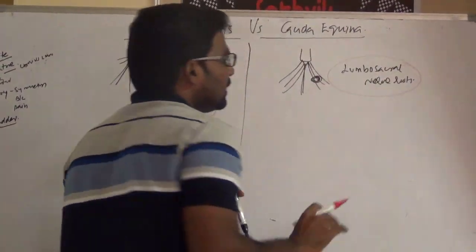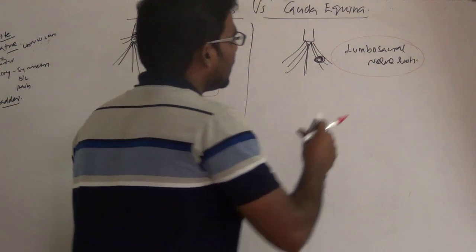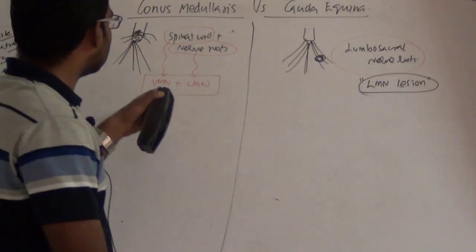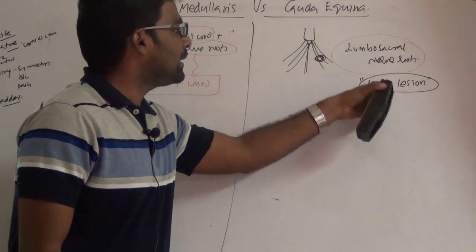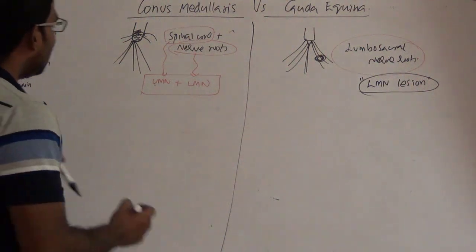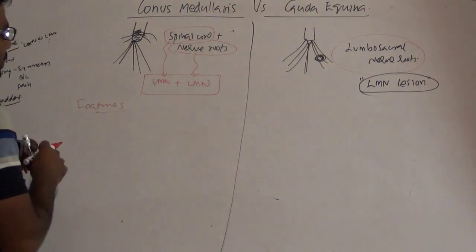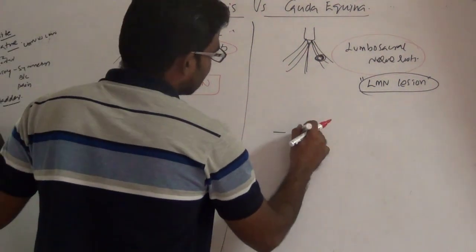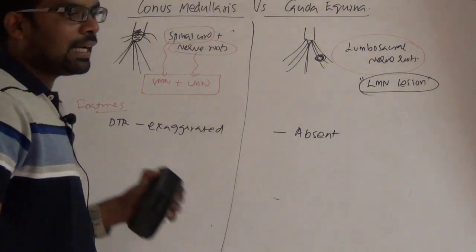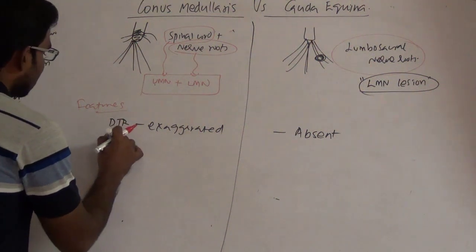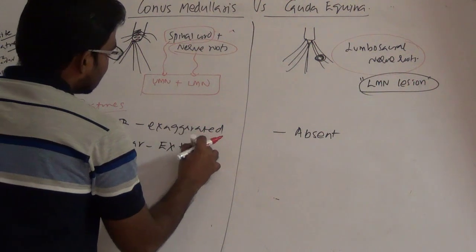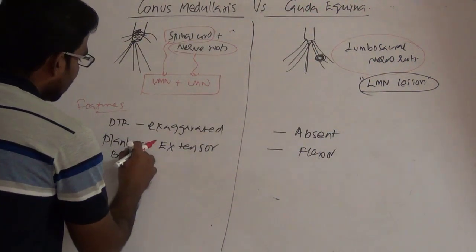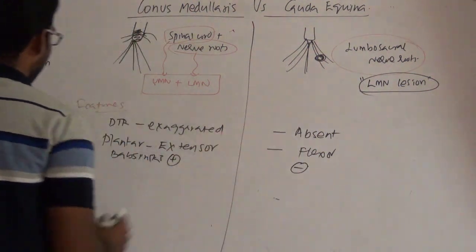Cauda equina, on the other hand, preferentially involves only the lumbosacral nerve roots, making it a purely LMN lesion. Because conus medullaris has a UMN component, deep tendon reflexes are exaggerated. In cauda equina, deep tendon reflexes are absent below the level of the lesion. For plantar response: it is extensor (Babinski positive) in conus medullaris, and flexor (Babinski negative) in cauda equina.